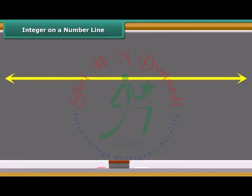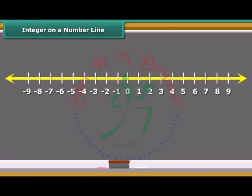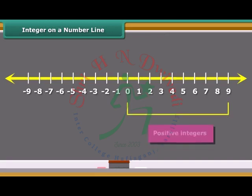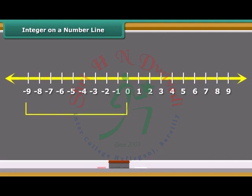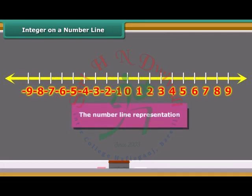This figure represents a line marked with some points at equal distance. A point on it is marked as zero. Points to the right of zero are positive integers. Points to the left of zero are negative integers and are marked minus 1, minus 2, minus 3 and so on. This type of representation of integers is called the number line representation.